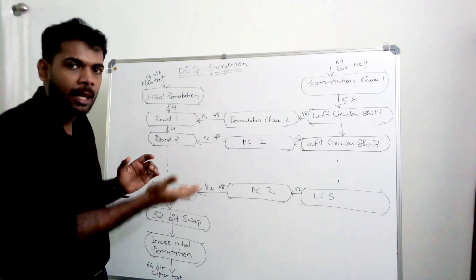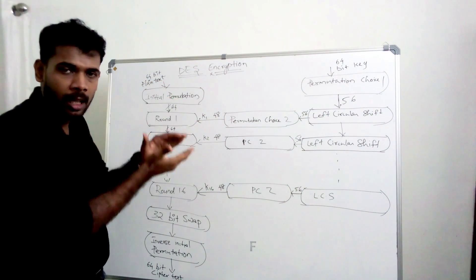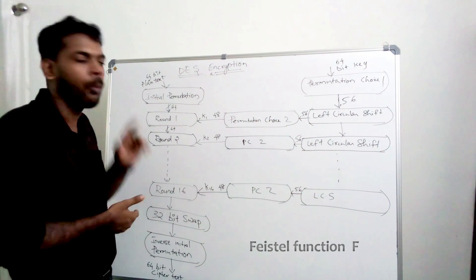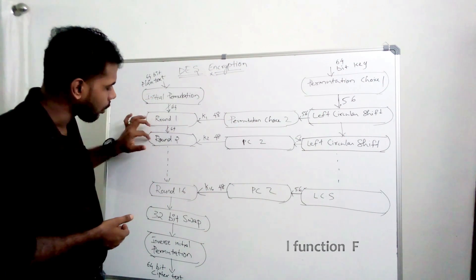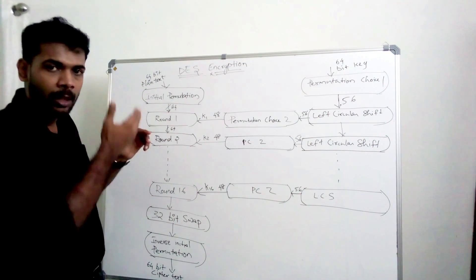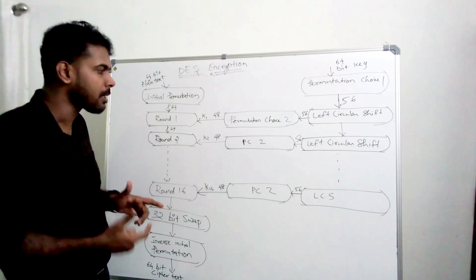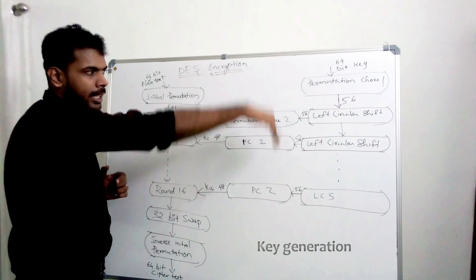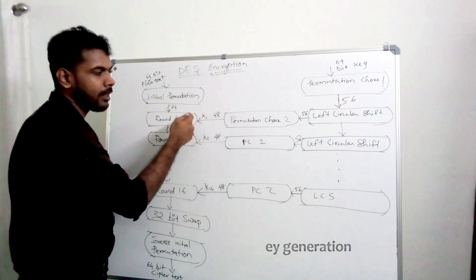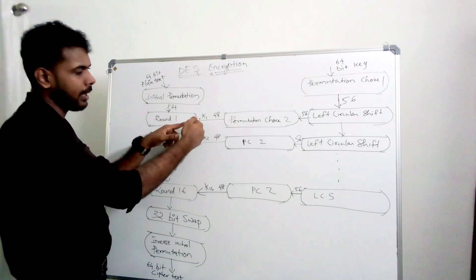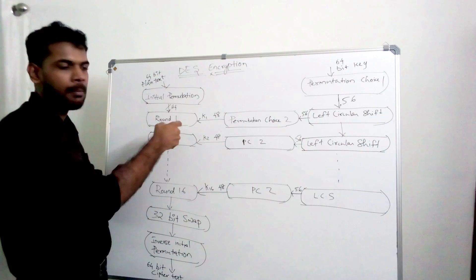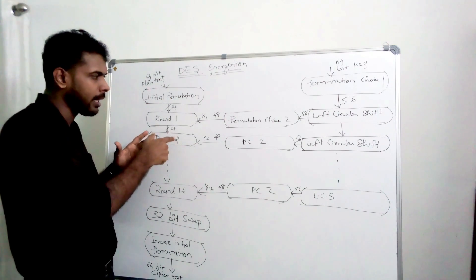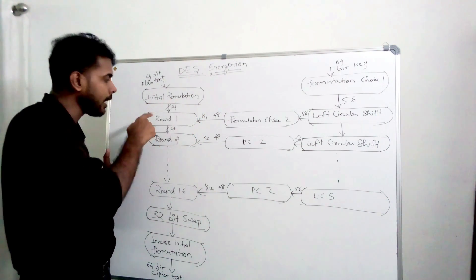The 64-bit plaintext goes through a straight permutation, which is a complete 64-bit output. Then it goes through 16 rounds — round 1 through round 16 — where encryption takes place. Each round uses a key of 48 bits.